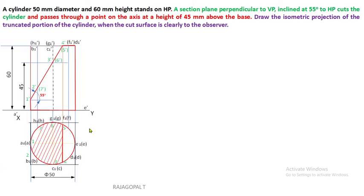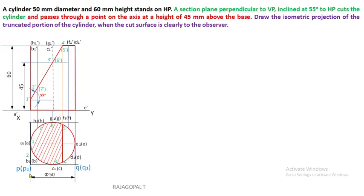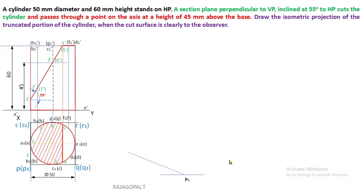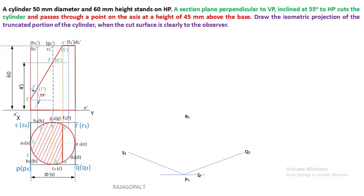For isometric projection, whatever the shape — circle, pentagon, or hexagon — we form a rectangle or square by joining the boundaries of the circle. Being a cylinder, the top face is one circle and the bottom face is another circle, so we have two square shapes that must be reproduced in isometric projection after converting to isometric scale. The inclination of P1S1 and P1Q1 is 30 degrees.